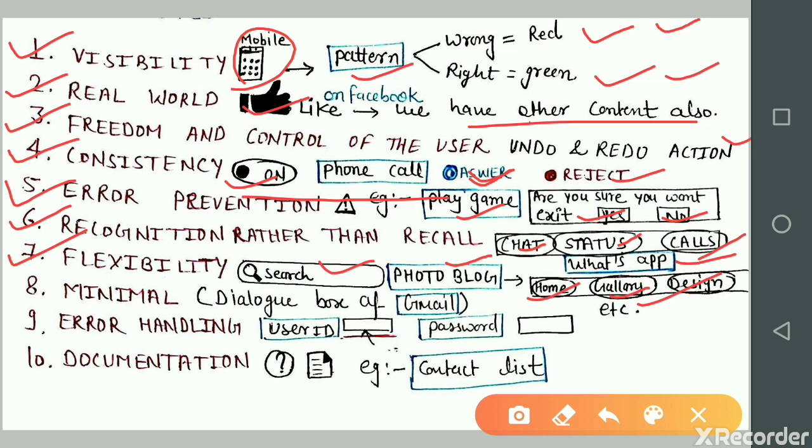Rule number eight is minimal dialogue. Example: dialogue box of Gmail. In design, avoid text and design that talk more than you need to know. The dialogue system must be simple.